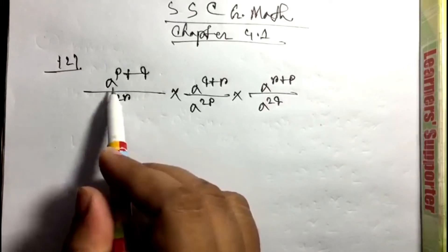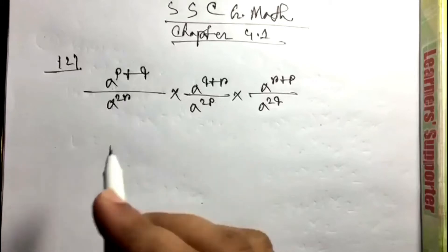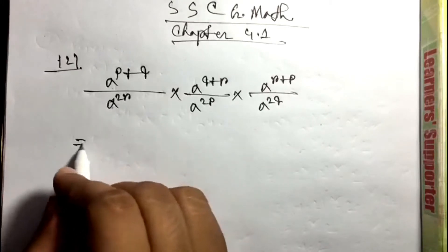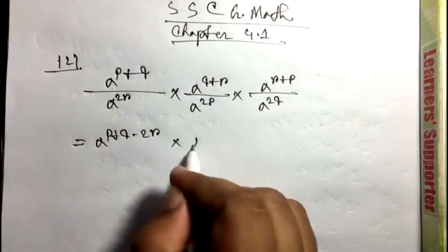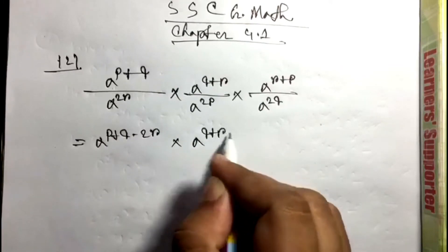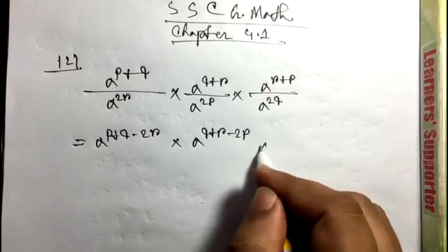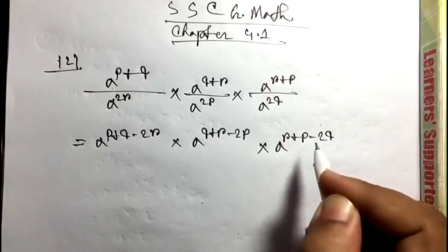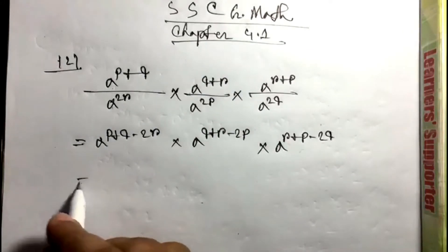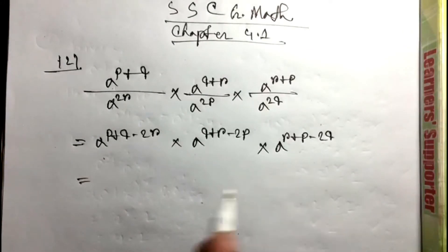Same base, power division relation - power minus. I'm going to link together: a to the p plus q minus 2r, keep it again, link together a to the q plus r minus 2p, keep it, link together a to the r plus p minus 2q.